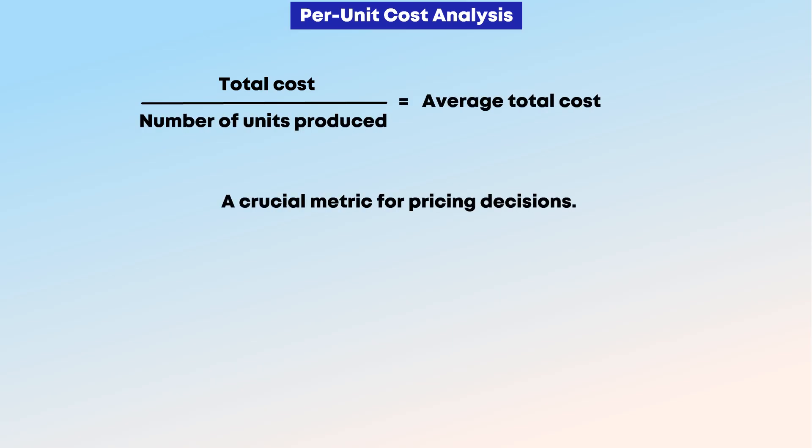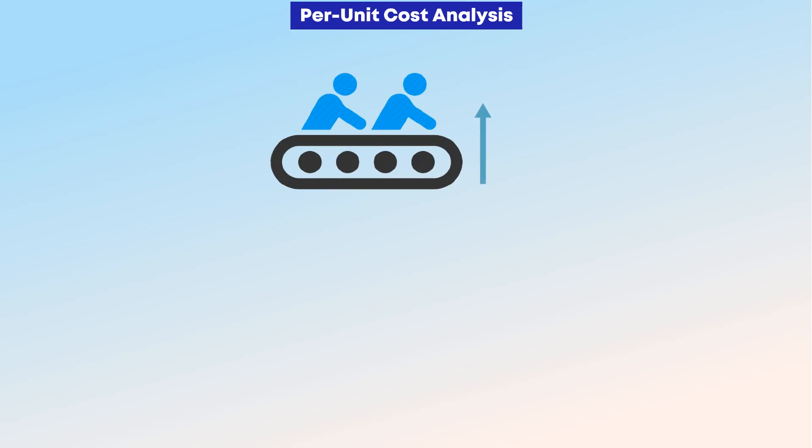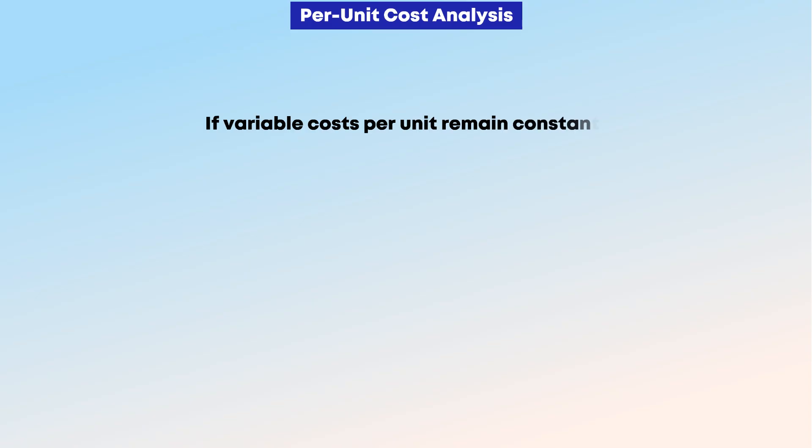Per unit cost analysis: Dividing total cost by the number of units produced yields average total cost, a crucial metric for pricing decisions. As production volume increases, fixed costs spread across more units, potentially reducing average total cost. However, if variable costs per unit remain constant, the average total cost curve will eventually flatten as volume grows.